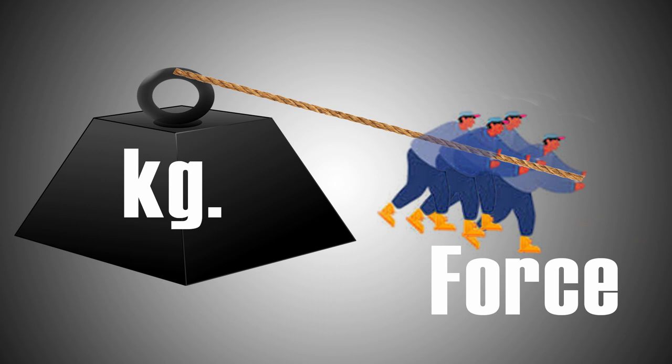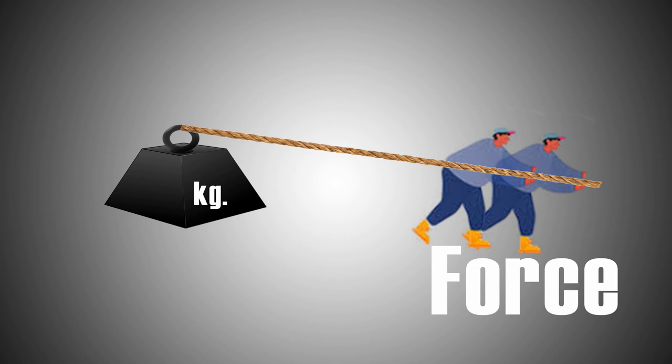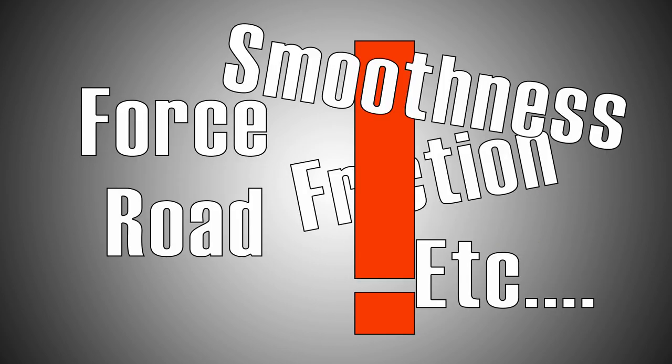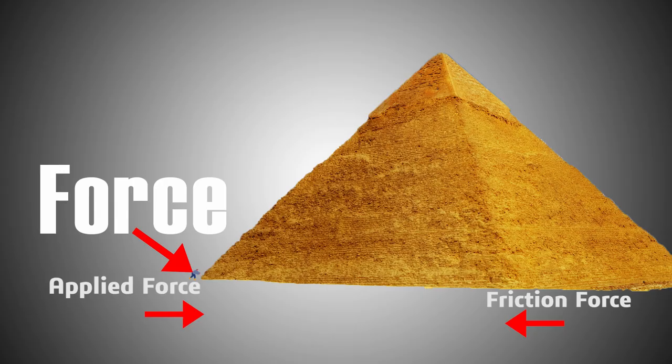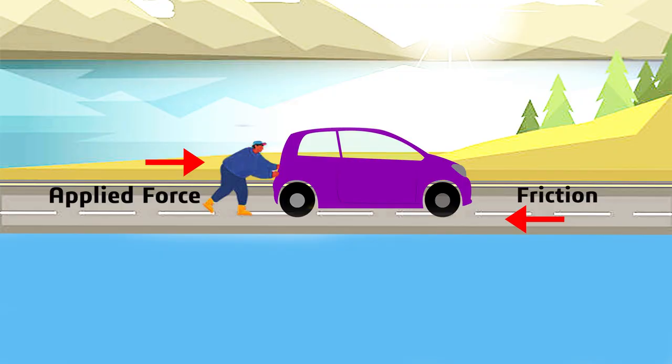It is more difficult to move a heavier object on the ground than a lighter one, where the two objects are of the same material. To get a feel for this, try to move a big block, like an Egyptian pyramid block — or try to push a car while its handbrake is on. That makes sense.